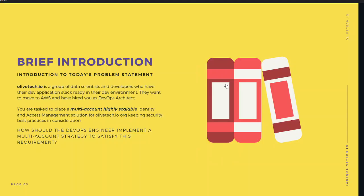Now would be a good time for us to get introduced to the problem statement we have at hand. OliveTag.io is a group of data scientists and developers who have their dev application stack ready in their dev environment and they want to move to AWS.